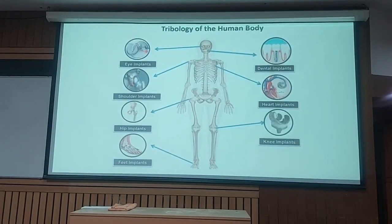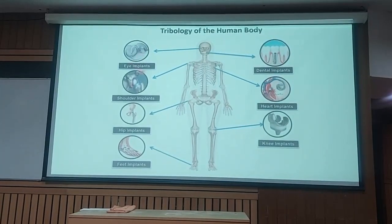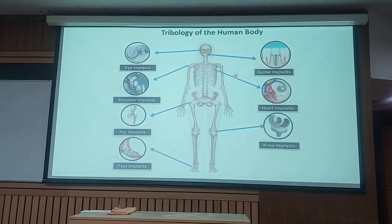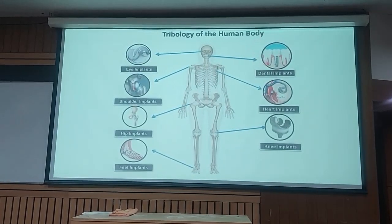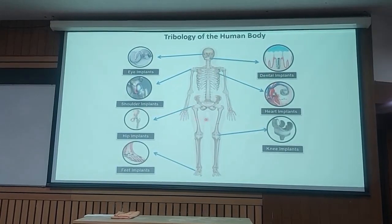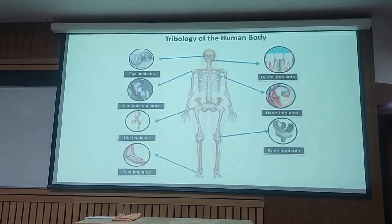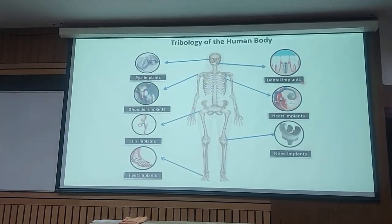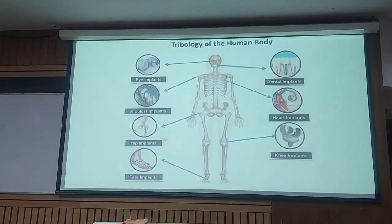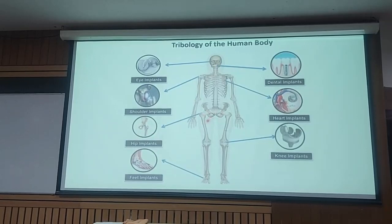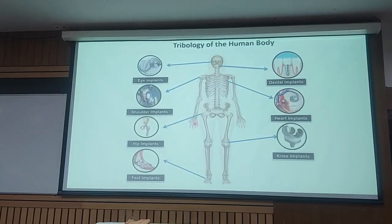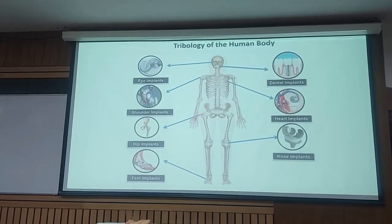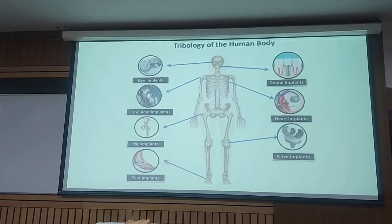There are a lot of issues in the body that we need to take care of. For example, eye dryness or eye problems — eye implants are needed. Dental implants are a big area for tribological complications. Shoulder implants, and even in the heart — artificial heart valves move and there will be a problem of adhesion, which is also a tribological issue. Hip implants — when there are issues with the hip, some people unfortunately need an implant, and these implants should have certain properties. There are also knee implants and feet implants.